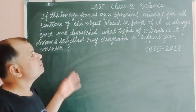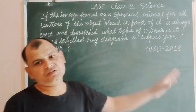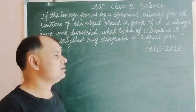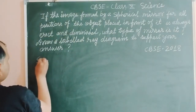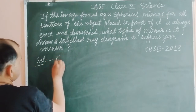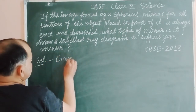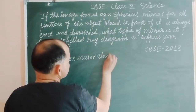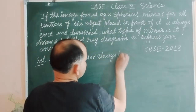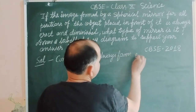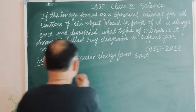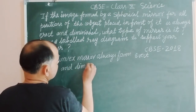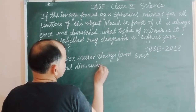The question is asking which type of mirror always makes an erect and diminished image. You know that an erect and diminished image is always formed by a convex mirror. A convex mirror always forms an erect and diminished image, meaning its size is smaller than the object.